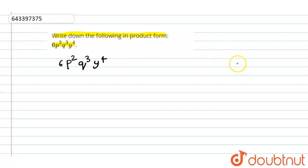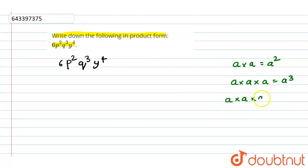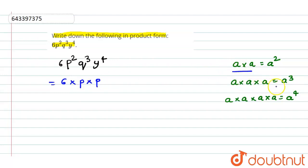So, if we have A cross A then we write it as A squared, because the base is the same and the powers are added. Just like A into A into A is A cubed, and A into A into A into A is A to the power 4, because it is multiplied 4 times. So, P into P is P squared, and Q into Q into Q is Q cubed.